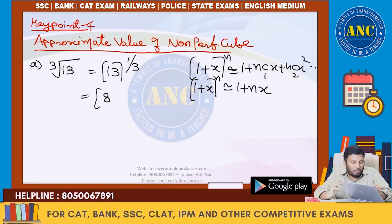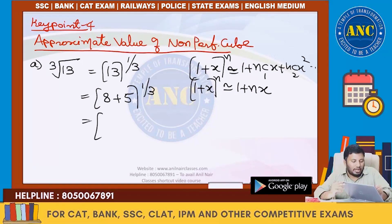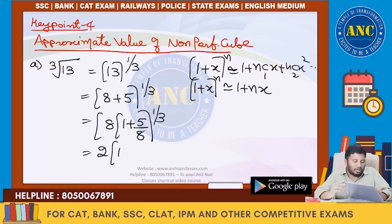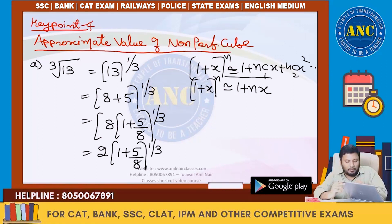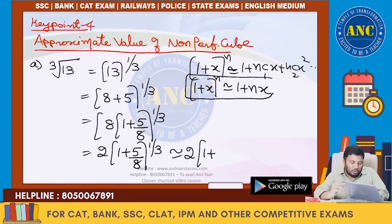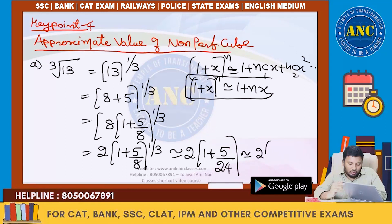What is the nearest cube for 13? It is 8 plus 5, so 8 plus 5 power 1 by 3. Factor out 8: that gives 2 into 1 plus 5 by 8 power 1 by 3. Using the approximation 1 plus x power n ≈ 1 plus nx, this becomes 2 into 1 plus 5 by 24, which is 2 into 1 plus 0.2.